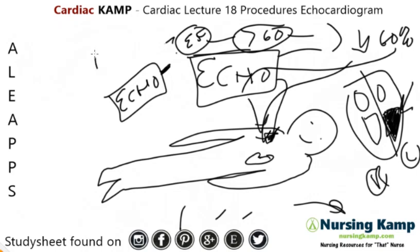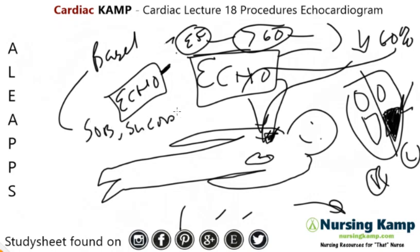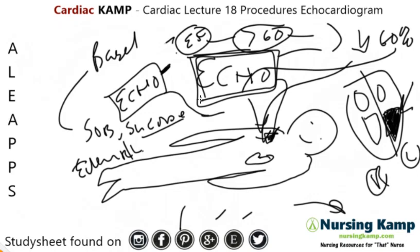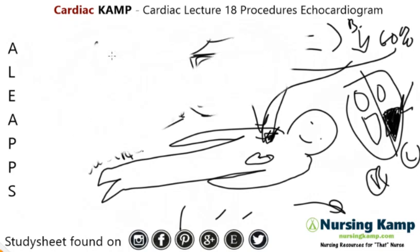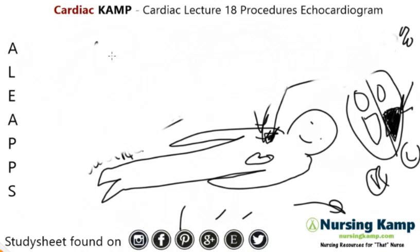Echoes are done either for baseline or when a patient is symptomatic — like shortness of breath, syncope where they faint, or symptoms of edema or right- or left-sided symptoms. A lot of times with family history we're going to do an echo, or if a patient is admitted. So the first step is a bedside echo, and the bedside echo is non-invasive. You have the patient lying on their side and you put an ultrasound on them.